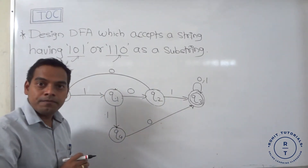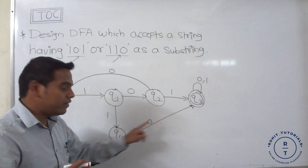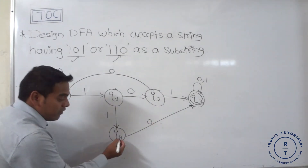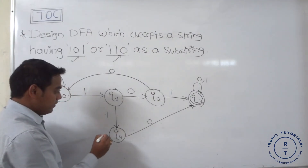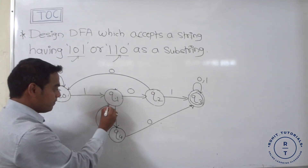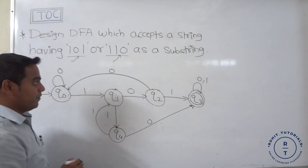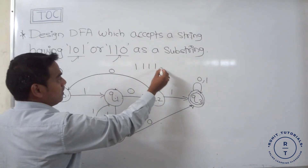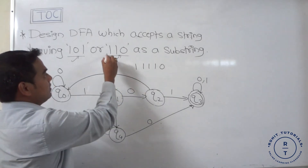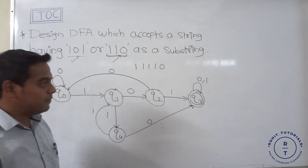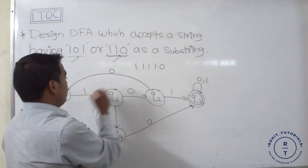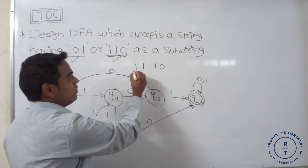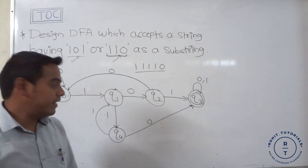Now what about Q4? At Q4 state, the 0-transition is already completed — it goes to Q3. What about 1? Suppose we consider the string 11110, which contains 110 as a substring, so it should be accepted. Tracing: 1 goes to Q1, 1 goes to Q4, 1 goes to Q1, 1 goes to Q4, 0 goes to Q3. So the string is accepted.